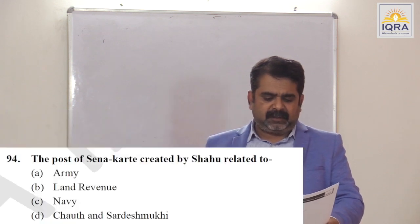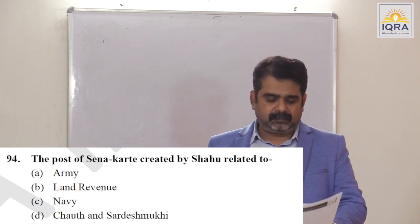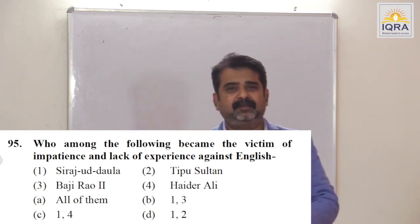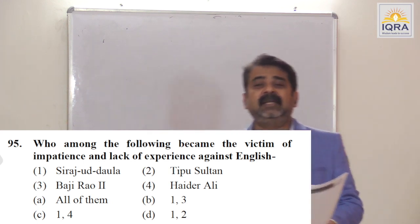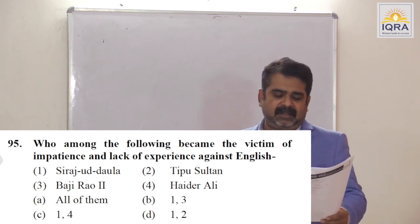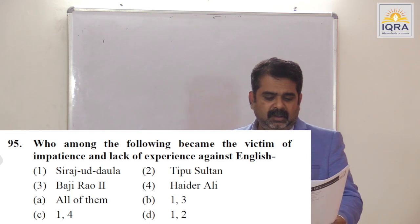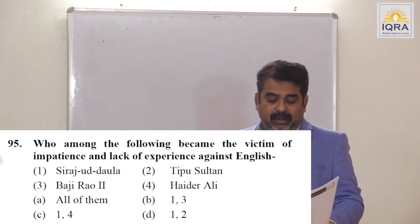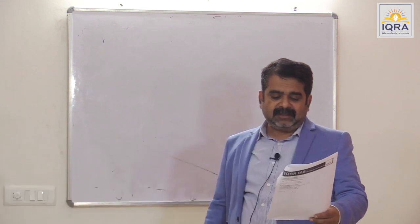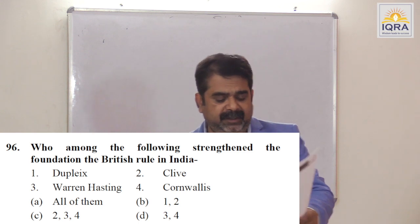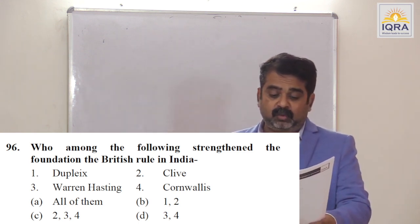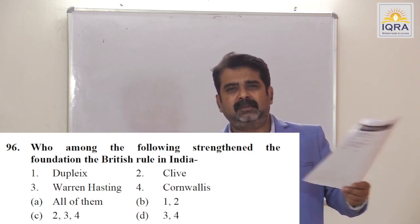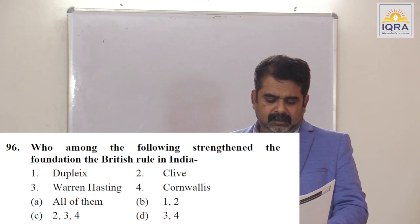The post of Sena Karthe created by Shah was related to army. Answer is A. Who among the following became the victim of impatience and lack of experience against the English? Siraj-ud-Daula — Battle of Plassey; when he leaves the battlefield on the advice of Mir Jafar, his army surrenders. Answer is D, statements 1 and 2 — Siraj-ud-Daula and Tipu Sultan. Who laid the foundation of British rule in India? Dupleix and Clive. Who strengthened the foundation? Warren Hastings and Cornwallis — administrative, judicial, revenue reforms. Answer is D.